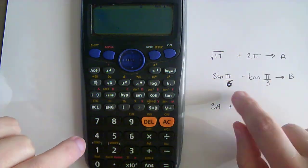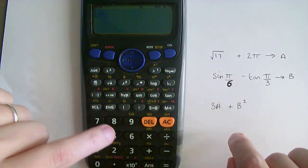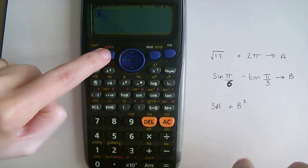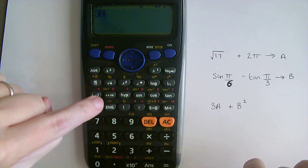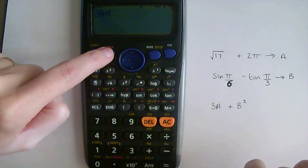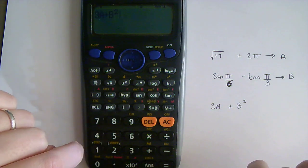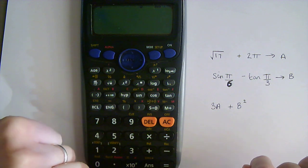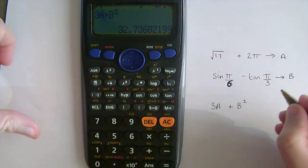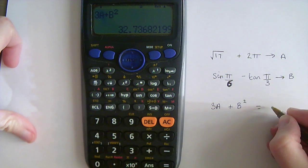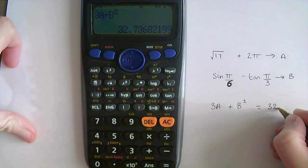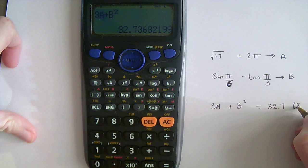And so if I want to work out this sum here, so that was 3 lots, so 3 times memory A, so alpha A, plus the square of B, so B squared. So all I need to then do is just write out that one single answer, so that's 32.7 to 3 significant figures, which we're going to assume that it is.